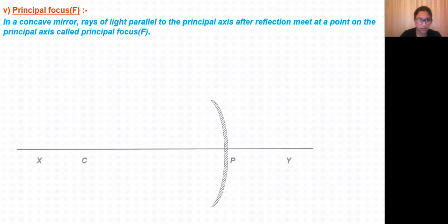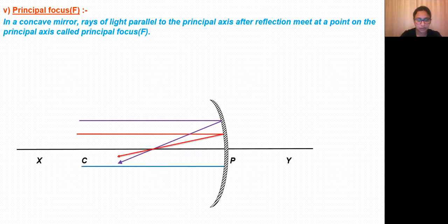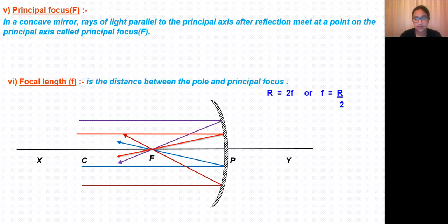The next parameter is principal focus. In a concave mirror, rays of light parallel to the principal axis meet at a point on the principal axis after reflection — this point is called the principal focus, represented by capital letter F. The distance between the principal focus and the pole gives the focal length. There is also a relation connecting the radius of curvature and the focal length: the radius of curvature R is equal to twice the focal length.